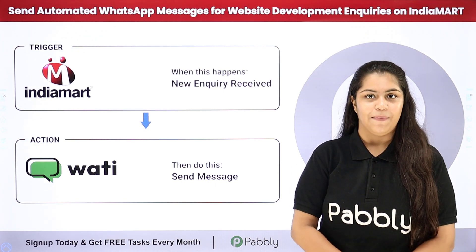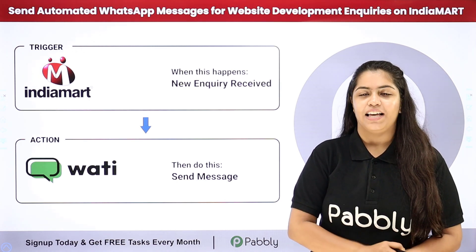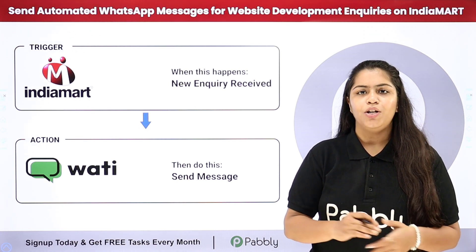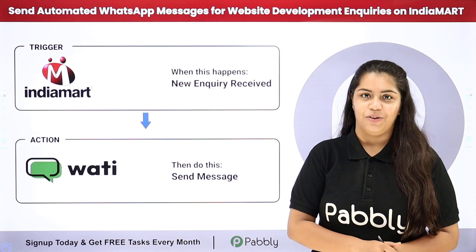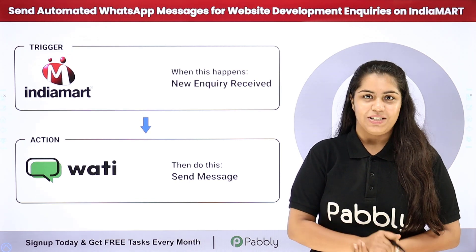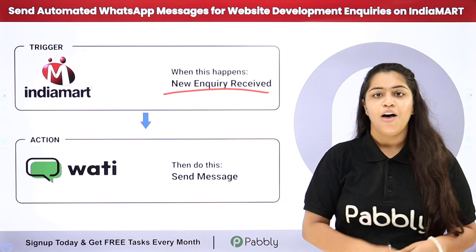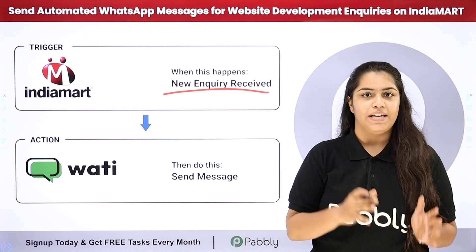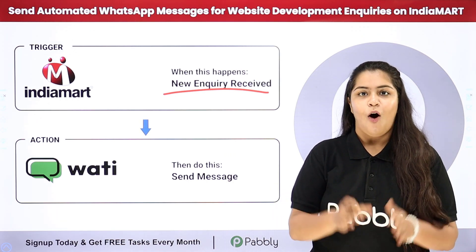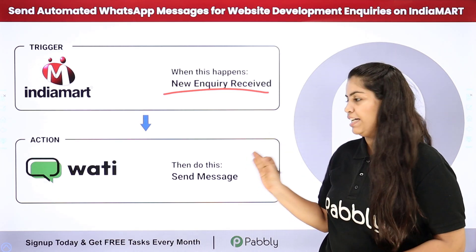I am running a website development company and for that I use India Mart. We receive a lot of inquiries through our India Mart account. What I want is that as soon as a new inquiry is received from India Mart, an automated WhatsApp message should be sent to my lead or the person who submitted the inquiry, with the help of Vati.